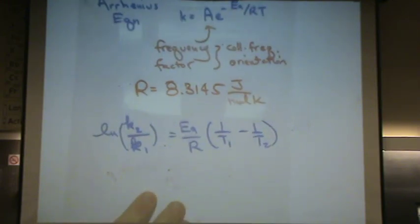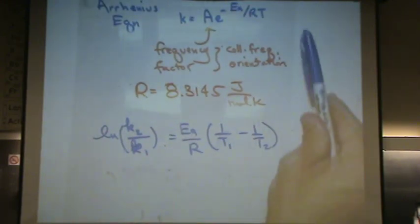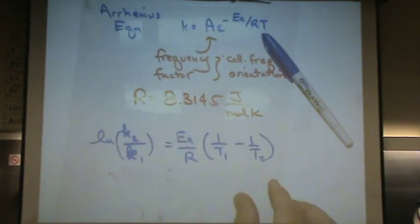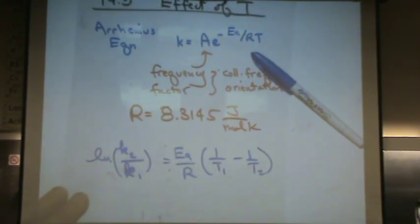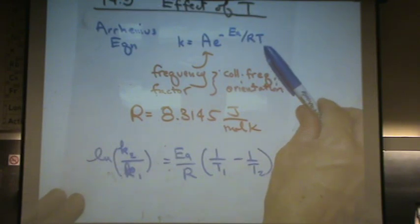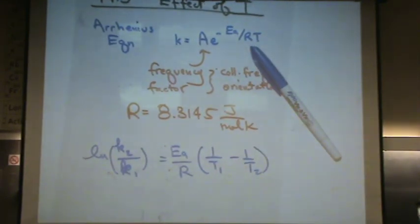The basic concept behind this is that as the temperature goes up, is the rate constant going to go up or down? Because it's in the denominator and that's negative, the rate constant will go up.